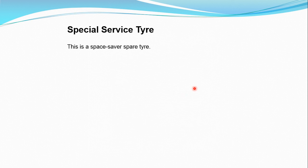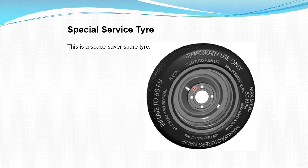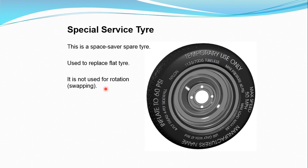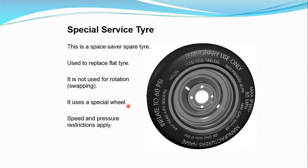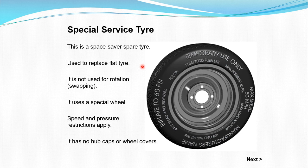Next is the special service type of tire, also known as a spare tire or step-knee tire. It is used to replace a flat tire and is not used for regular rotation — only for specific applications. Speed and pressure restrictions apply: it cannot be used at high speed, and the specified pressure must be maintained. No hubcap or wheel cover is used. It is a temporary type of tire only — the spare tire you see in a vehicle is this special service tire and cannot be used as a main tire.